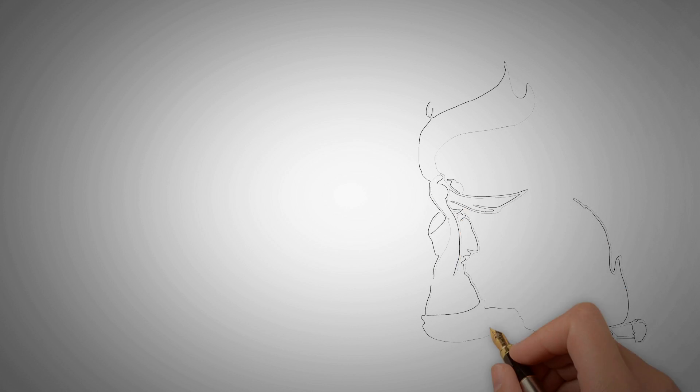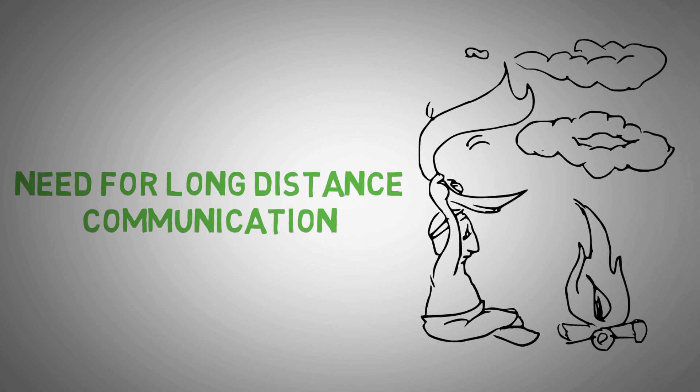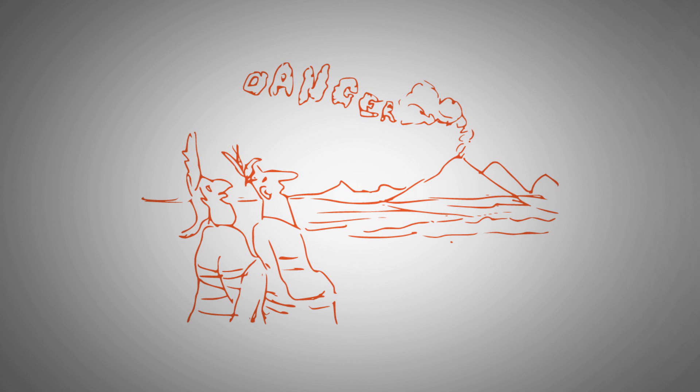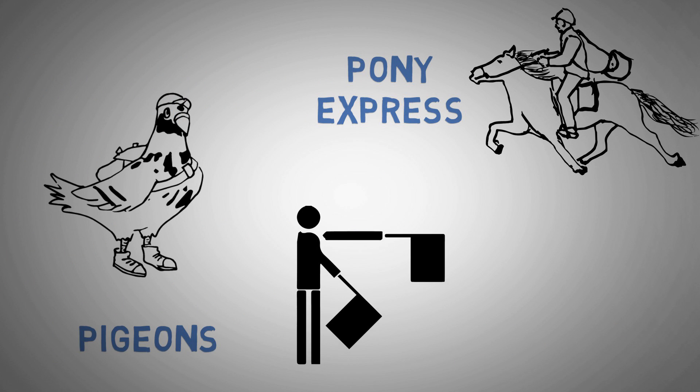We have shown how in the beginning cavemen could communicate verbally, but when the need for long distance communication arose, several techniques such as smoke signal, pigeons, pony express, semaphore flag etc. were developed.